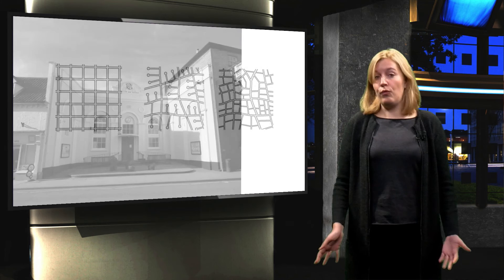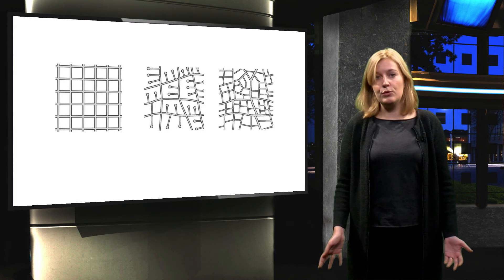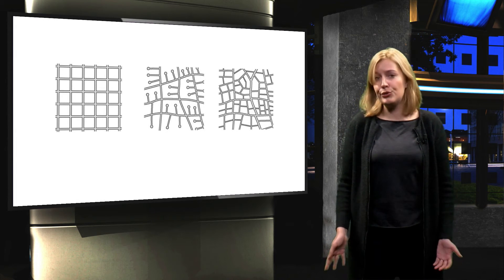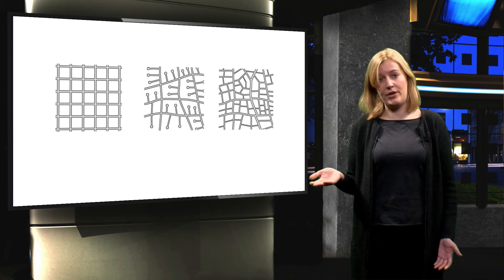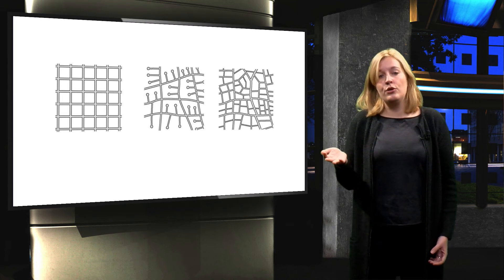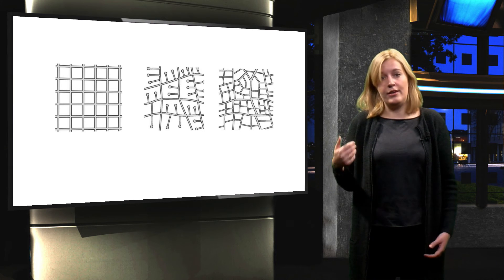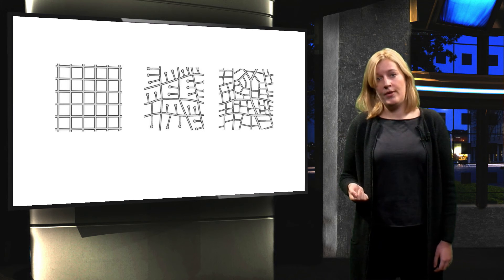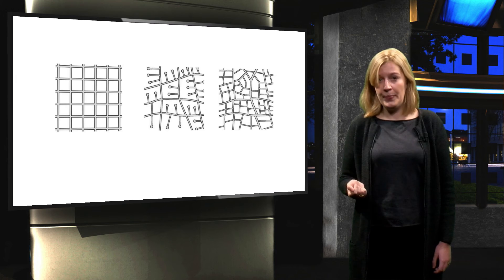Fourth, legibility. A legible neighbourhood is recognisable for older people and easily understood. For instance, it has an irregular grid pattern. The street pattern should be supported at street level by clear signs and symbols, and buildings should reflect their use with visible and obvious entrances, so older people know where to go.